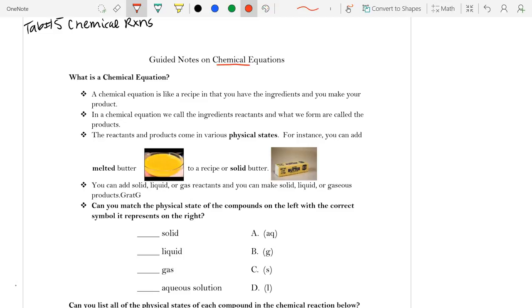Now, chemical equations. Chemical equations are how we represent reactions, because we need to be able to, through the written form, explain what's happening. A chemical equation is similar to a recipe. You have ingredients and you make your products.